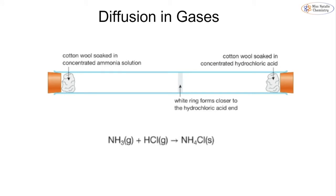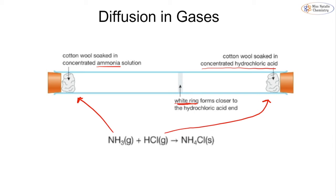A common experiment to demonstrate diffusion uses a glass tube with cotton wool soaked in ammonia solution (NH₃) at one end and cotton wool soaked in concentrated hydrochloric acid (HCl) at the other end. Both liquids evaporate and their vapors travel along the tube. A white ring of ammonium chloride salt forms inside the tube where the two gases meet — a solid forming by deposition.